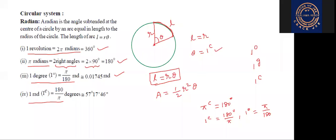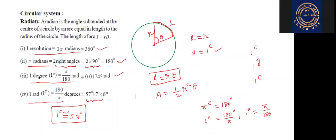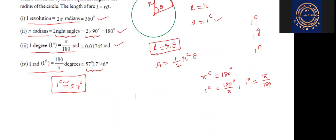Finally, one degree is equal to π/180, that is approximately 0.01745. And one radian is equal to 180/π degrees — approximately 57 degrees, 17 minutes, 46 seconds. That is the value of one radian. Students, remember this — it is important. One radian is approximately equal to 57 degrees.